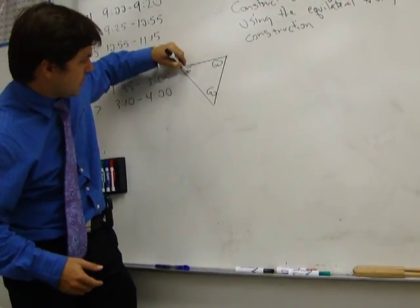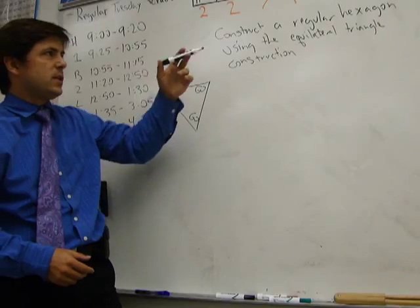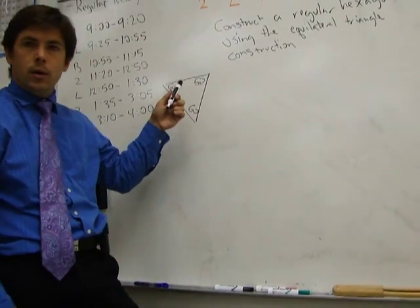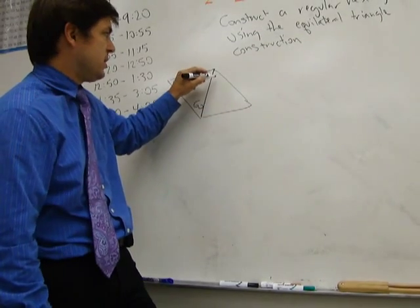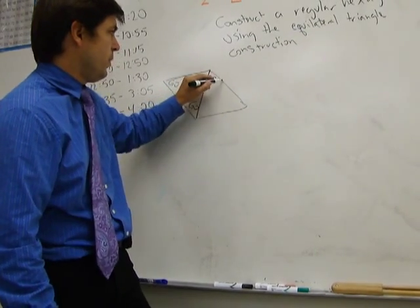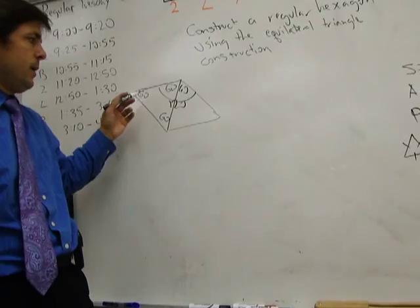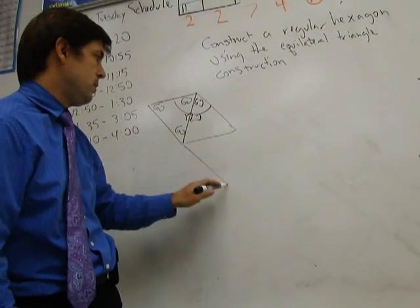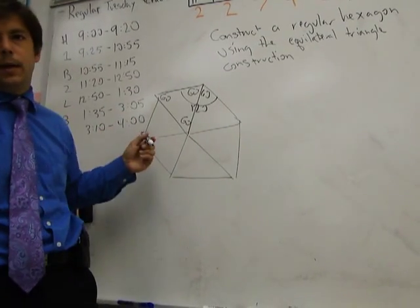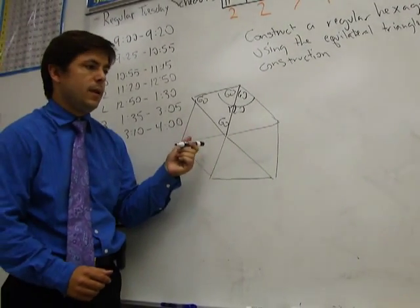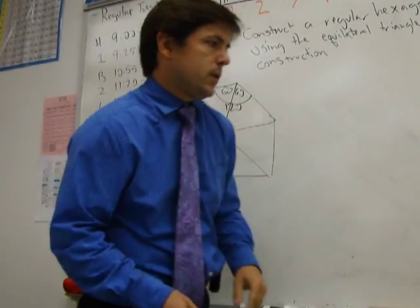This is 60, 60, and 60, and we know that in the hexagon they all have to be 120. Well, 60 plus 60 is 120, so basically if we put two of these together, we've got 120. Now, if we just keep doing this, what we're going to end up with is a regular hexagon. Of course, this is sloppy, that's why we have to construct it, but we're going to construct it.